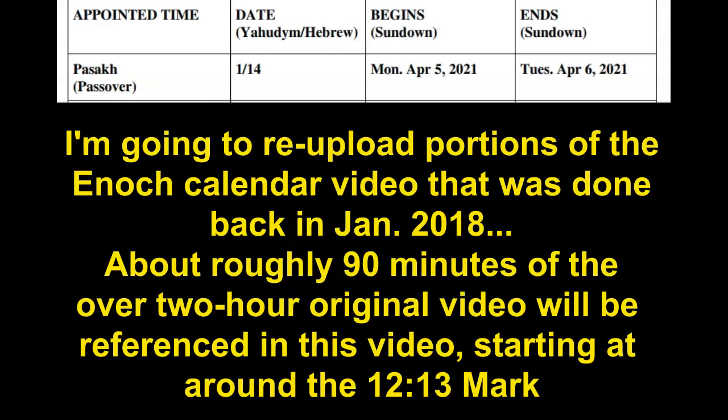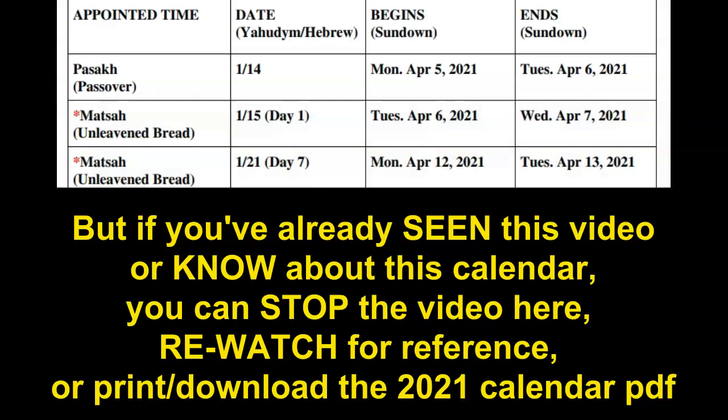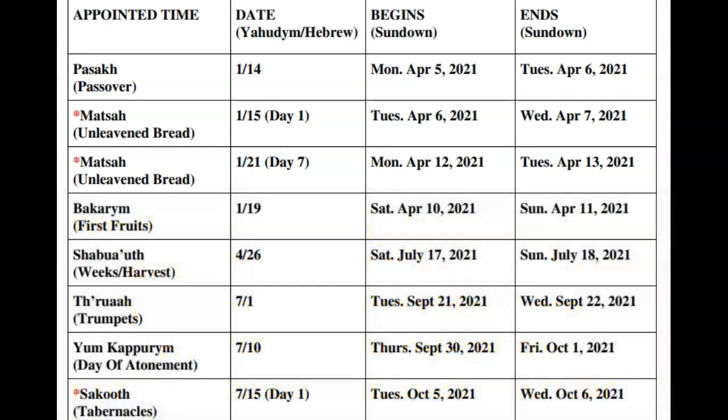The copy and paste portion we're going to include is about 90 minutes long — about an hour and 30 minutes. If you are already familiar with the Enoch calendar or have seen our 2018 video, you do not need to tune in unless you want to. But if you've been following this network for well over three years, you can stop the video here and print out the calendar. For those who'd like a refresher or are new to this network, here's the Enoch calendar video — a copy and paste from 2018.